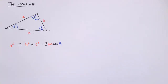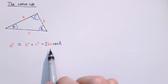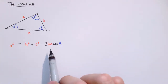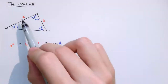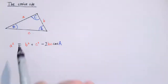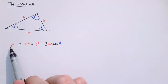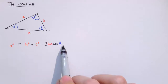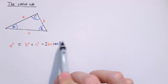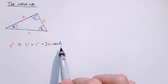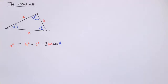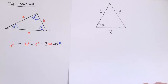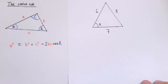Now what sort of problems is the cosine rule useful for? Well, you can see that if we knew all of the different lengths a, b and c, I could just substitute them in here and then these would all just become numbers and the only thing left would be capital A. So one situation this is good for is if we know all three sides of a triangle and we're trying to find out the angle.